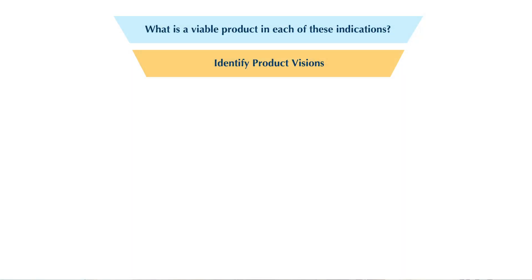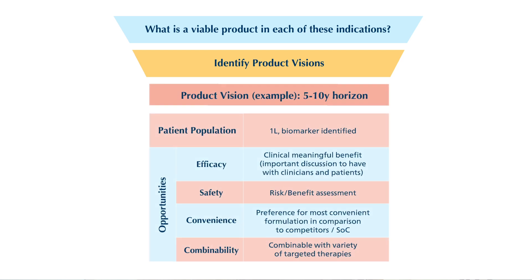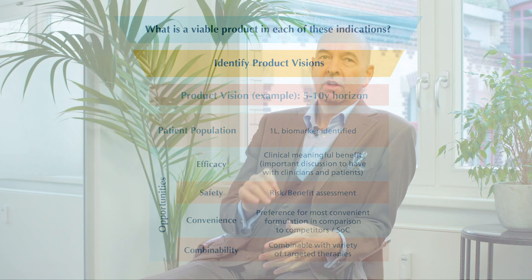Let's start with the product visions. For each indication, a product vision should be generated specifying parameters that establish differentiation vis-à-vis current and anticipated future competitors, so as to position the product successfully in the market. Oftentimes a pre-selection of relevant indications exists in organizations that have defined their strategic space in the format of a disease map — the part that they want to operate in, in terms of therapeutic areas and indications.